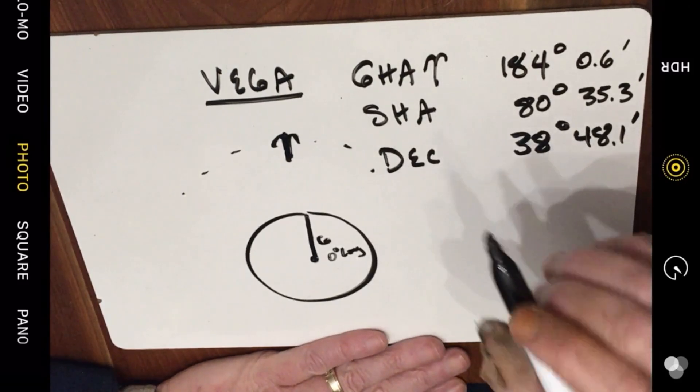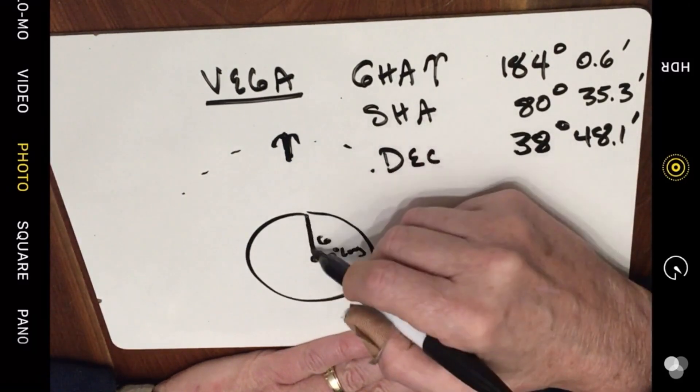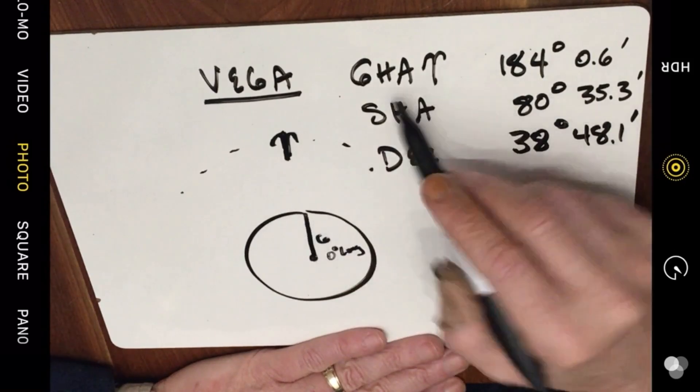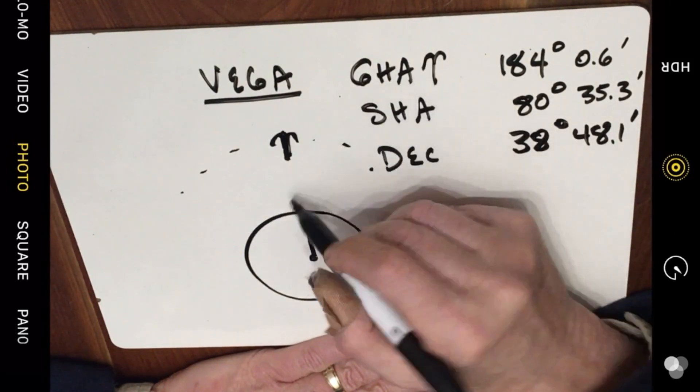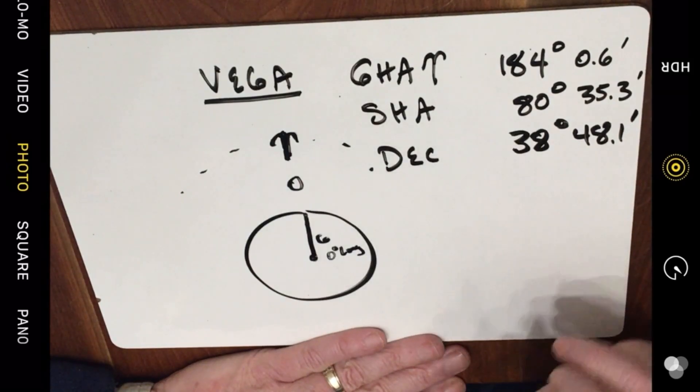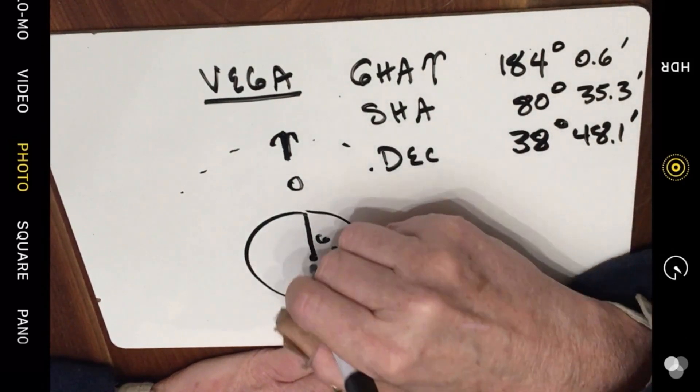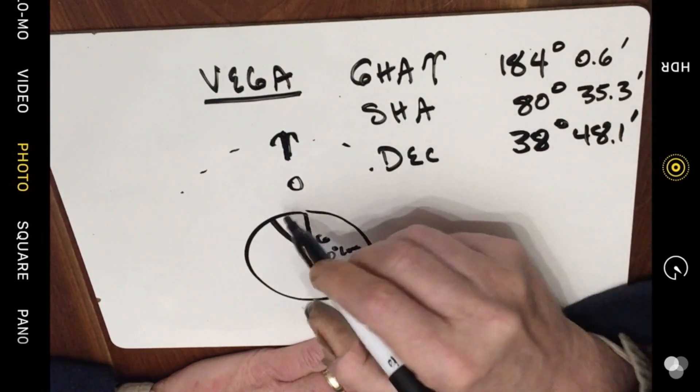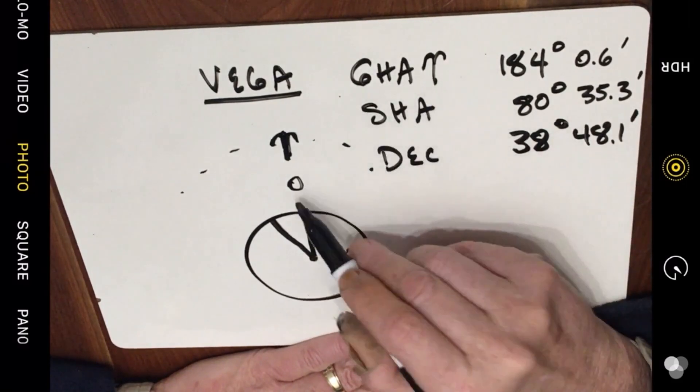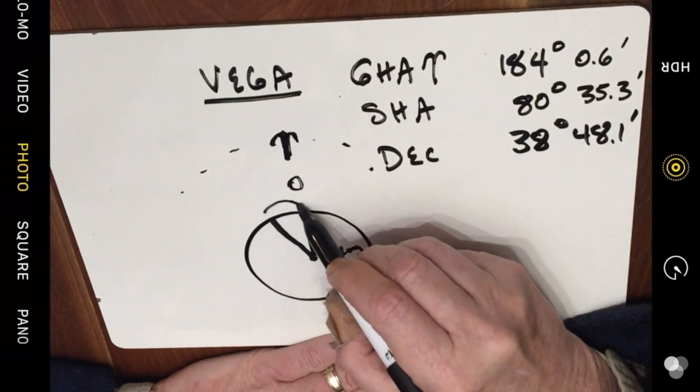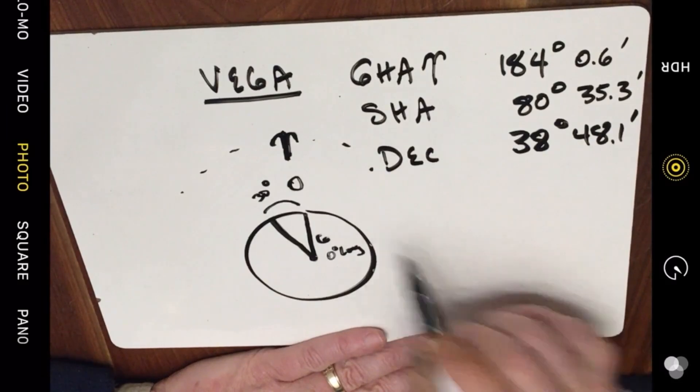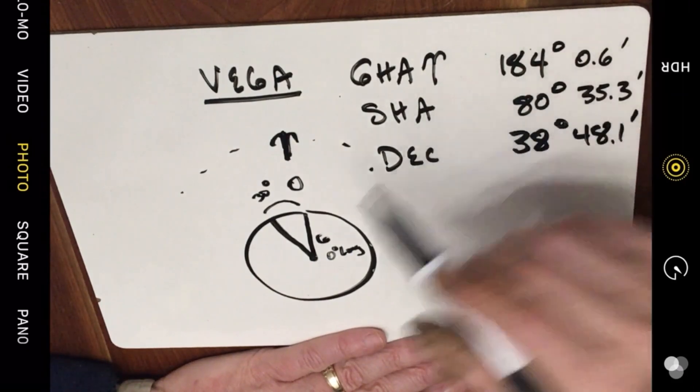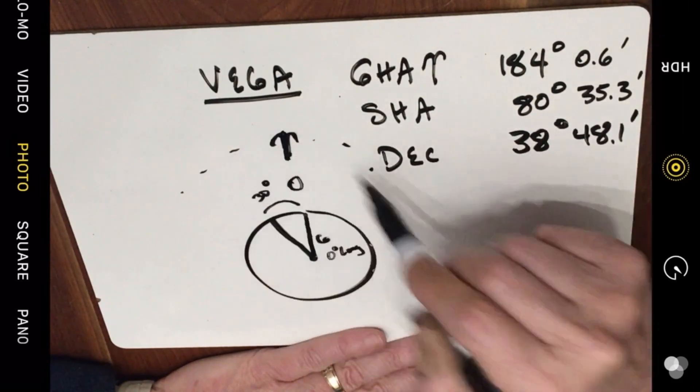So let's look at a situation right here where Aries is directly over the prime meridian of Greenwich. In that case, the Greenwich hour angle to Aries would be zero. And now as the earth rotates two hours later, we're going to be 30 degrees to the east. Our Greenwich hour angle to Aries will no longer be zero. Our Greenwich hour angle to Aries will now be 30 degrees. Likewise, if we wait another two hours, it'll be 60 degrees.